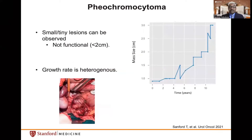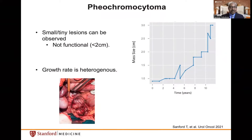What about the clinical dilemma where patients undergoing imaging for other sites, specifically the kidneys, have an adrenal mass detected but biochemical testing is negative? A good rule of thumb is that pheochromocytomas need to be two centimeters or larger to be functional. A study by Sanford and colleagues using active surveillance in patients with small lesions found the growth rate was heterogeneous; in some patients it took up to 10 years for a lesion of one to one-and-a-half centimeters to become functional. This data suggests active surveillance is reasonable in this scenario.